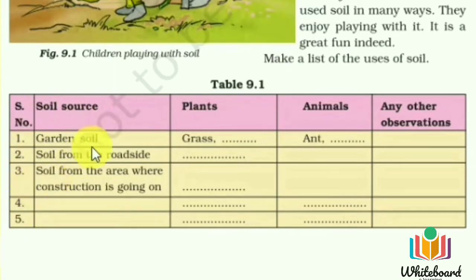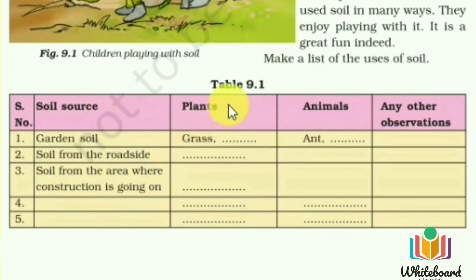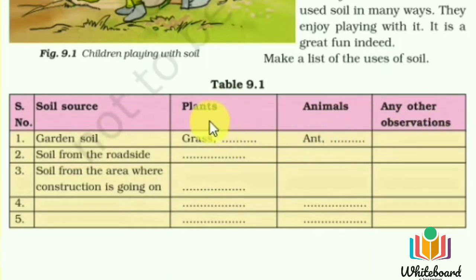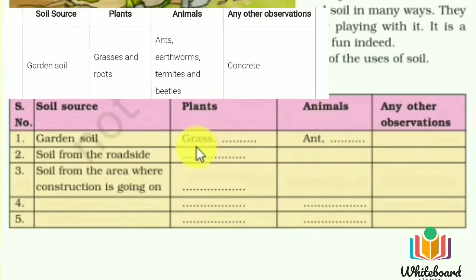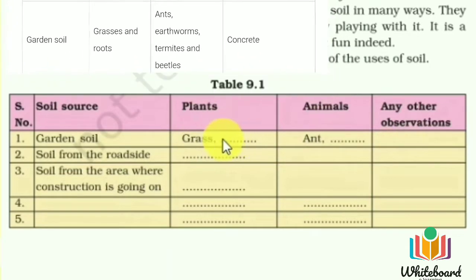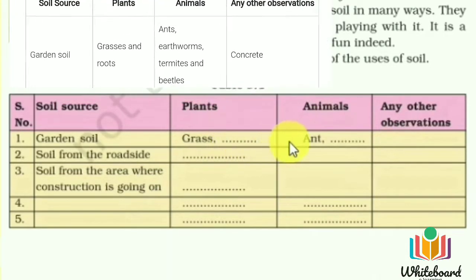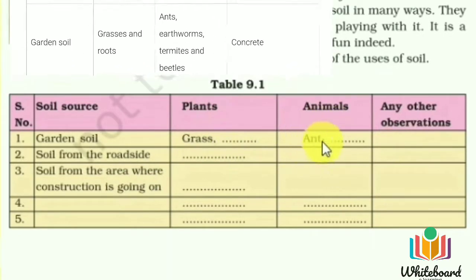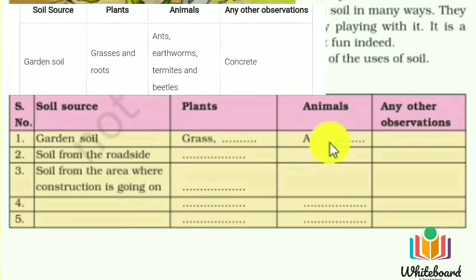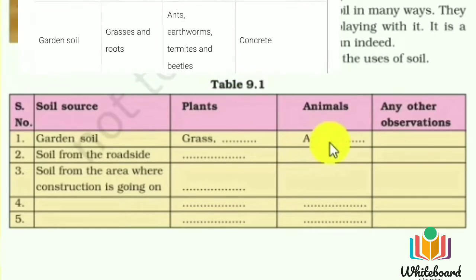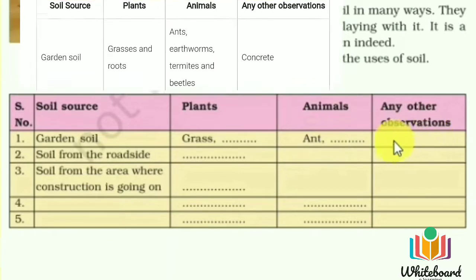For Table 9.1 — Garden soil: plant parts found include grass, roots, fallen leaves, and weeds. Animal parts found include ants, earthworms, termites, beetles, and ladybugs. Other observations: gravel and concrete parts can also be found in garden soil.